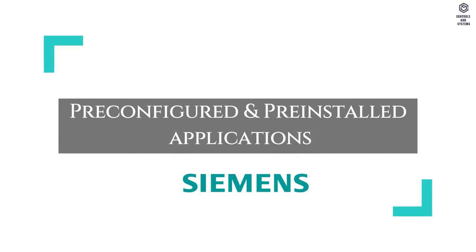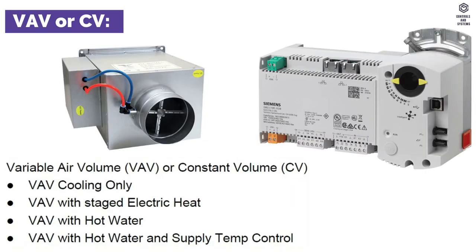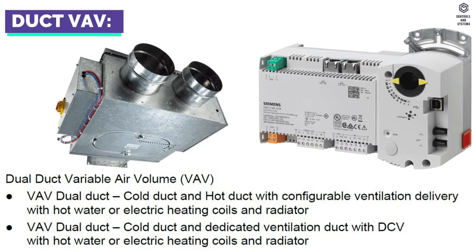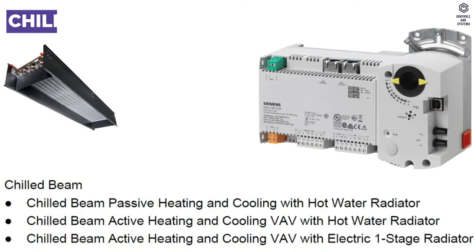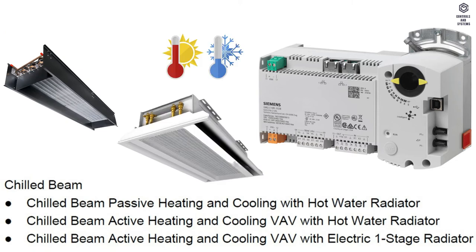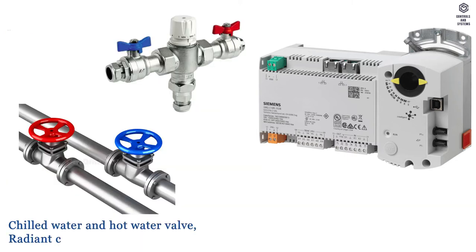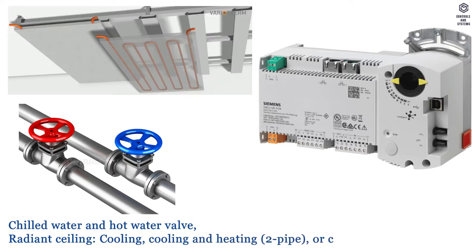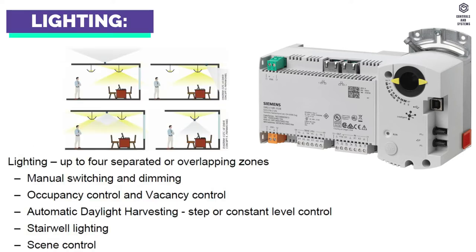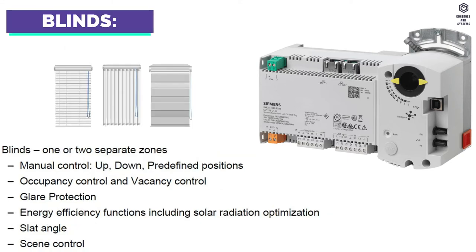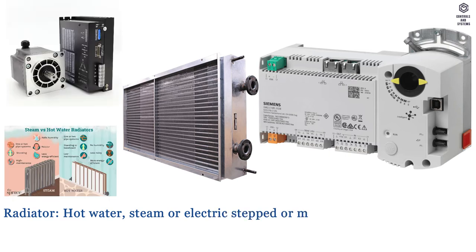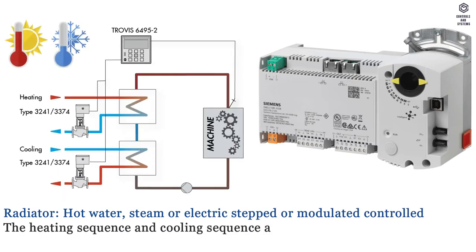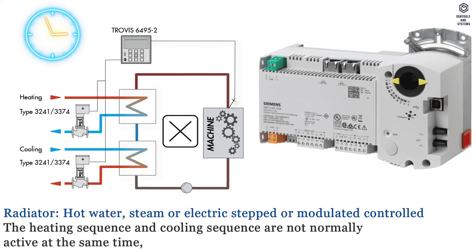Pre-configured and pre-installed applications include: variable air volume or constant volume, dual duct variable air volume, fan powered boxes, chilled beam for passive or active heating and cooling, chilled water and hot water valve, radiant ceiling for cooling and heating, light up to four separate zones, blinds with one or two motors, and radiator with hot water, steam, or electric stepped or modulated control. The heating sequence and cooling sequence are not normally active at the same time.